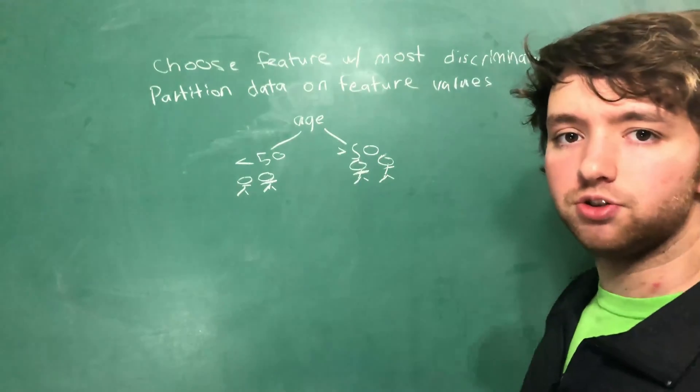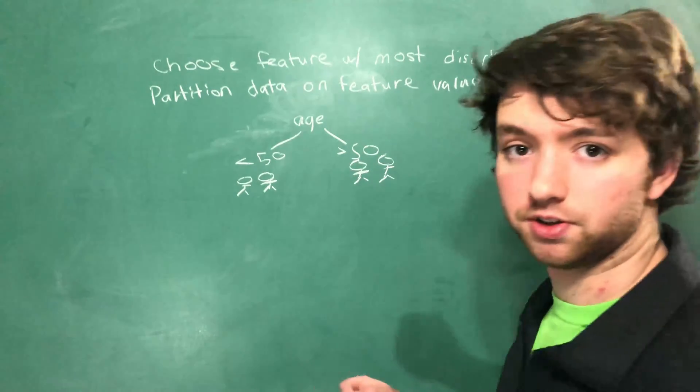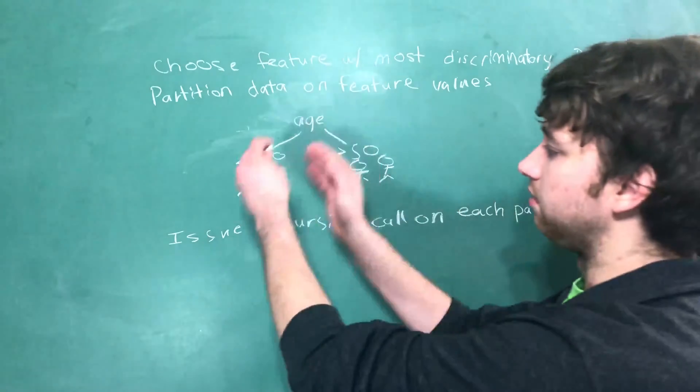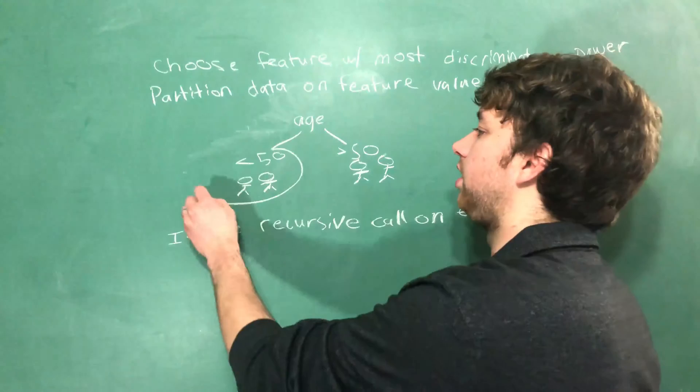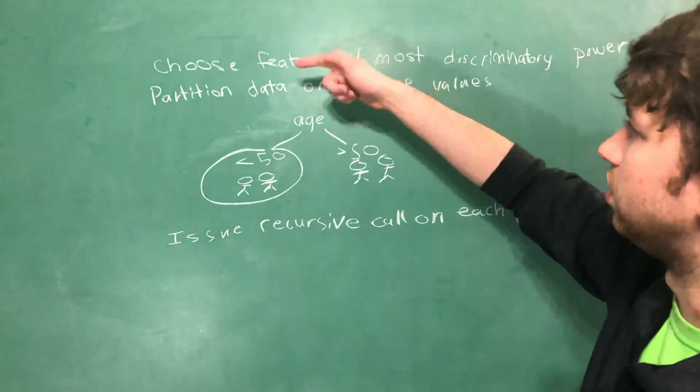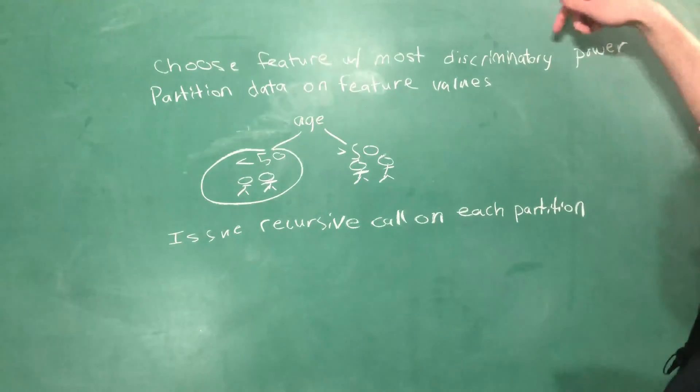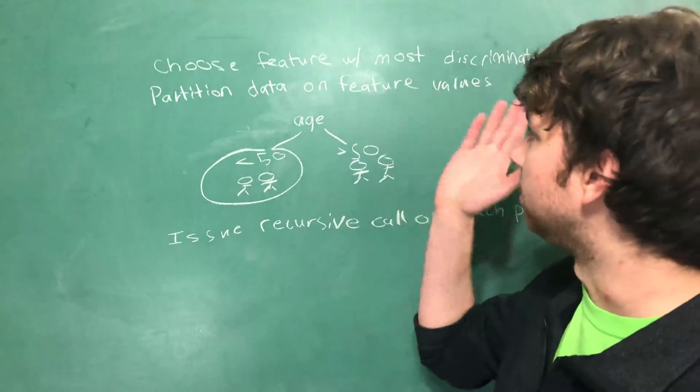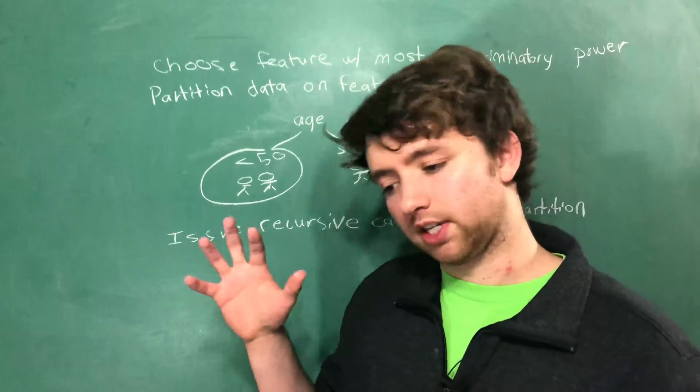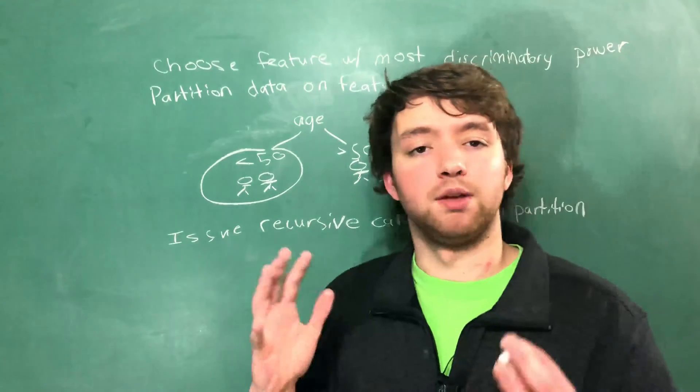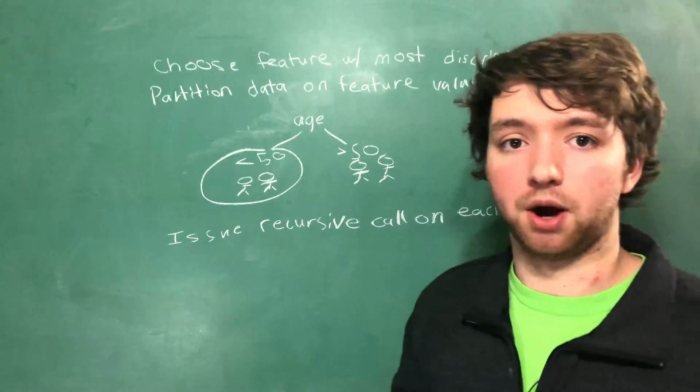The next thing is to issue the recursive call on each of the partitions. This is the part where the focal point is going to move down to a branch and do the same exact function. So it's going to choose the feature with the most discriminatory power. And remember, it can't choose age because that was removed from the list of features. So it's going to calculate all of the entropy for each of the descriptive features, and then pick the one with the most discriminatory power.